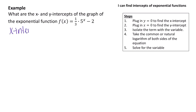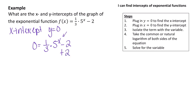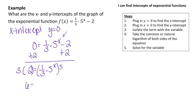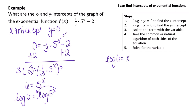The x-intercept occurs where y equals 0. Plugging in 0 for y gives 0 equals one-third times 5 to the x minus 2. We work on isolating the variable term by adding 2 to both sides: 2 equals one-third times 5 to the x. To remove the one-third, multiply both sides by 3, giving 6 equals 5 to the x. Now take the log of both sides: the log of 6 equals the log of 5 to the x. Using the power property, bring x down in front: log of 6 equals x times log of 5.